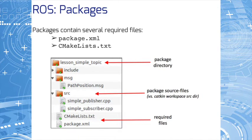Here is an example of what the package's root folder looks like on your system. You can see it has definitions of different message types — the path position message in this case. It also has source files for the two different nodes in the package: the simple publisher and the simple subscriber. And there are two important files: the CMakeList.txt file and the package.xml file.